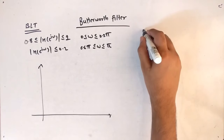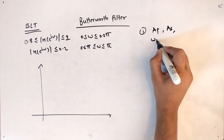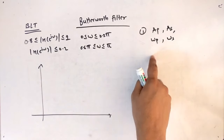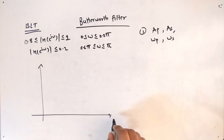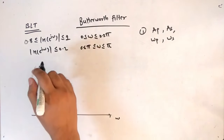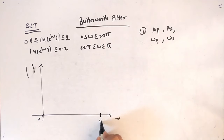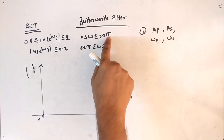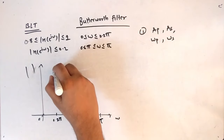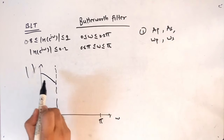The first step is to find terms like passband attenuation, stopband attenuation, and the digital frequencies — passband frequency ωp and stopband frequency ωs. These can be found using a graph. On the x-axis we have frequency, and on the y-axis we have the amplitude |H|. The lowest frequency is 0 and the highest is π. Between 0 and 0.2π the amplitude changes from 1 to 0.8.